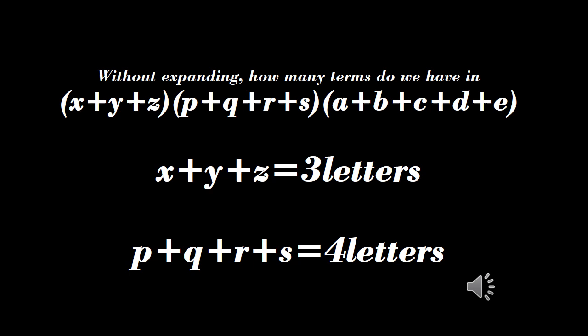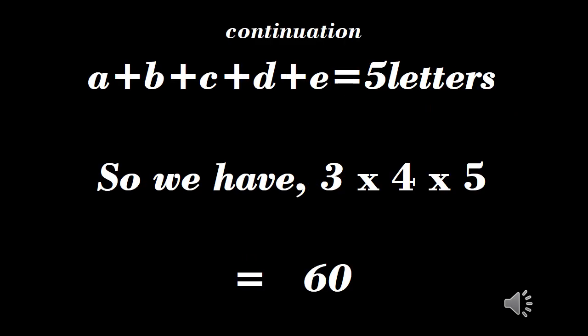Without expanding, how many terms do we have in (x + y + z)(p + q + r + s)(a + b + c + d + e)? Since x + y + z equals three letters, p + q + r + s equals four letters, and a + b + c + d + e equals five letters, we have three times four times five equals 60.